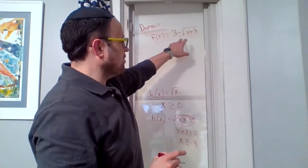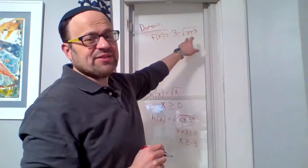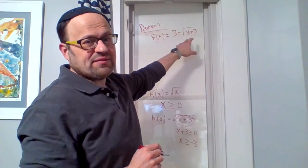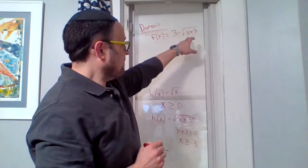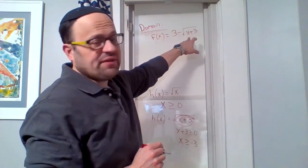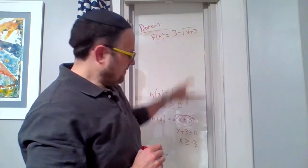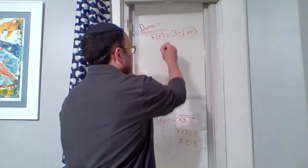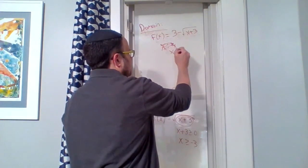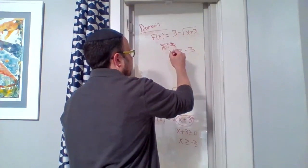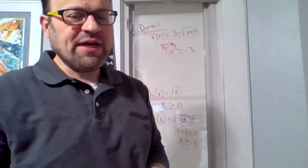Does this three minus change anything? Nope. What's inside the square root is all that matters. x, just like down here, can't be less than negative three, right? If x is negative 10, we have a problem. But if x is greater than or equal to negative three, then we're in business even with that three minus in front.